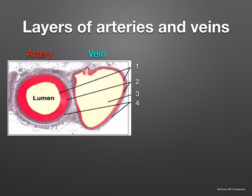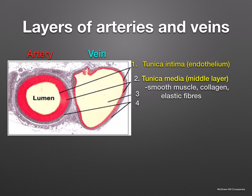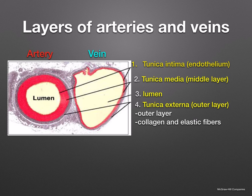Let's see if you can recognize the different layers in the blood vessels. Number one is the tunica intima, the endothelium — this comprises flat cells that fit together. Two is the tunica media, the middle layer — it comprises smooth muscle, collagen, and elastic fibers. Three is the lumen, that empty part where the blood flows through. And four is the tunica externa, the outer layer — this comprises collagen and elastic fibers.